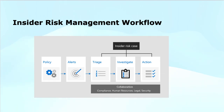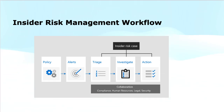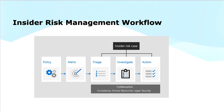Next is triage — the process of sorting and prioritizing alerts based on their severity and potential impact. Not all alerts are critical, so this step helps security teams focus on the most urgent issues. The triage process involves evaluating alerts to determine if they are false positives — harmless events — or genuine risks, which are potentially malicious or harmful behaviors. Alerts are categorized and prioritized so resources can be allocated effectively to the most serious risks.